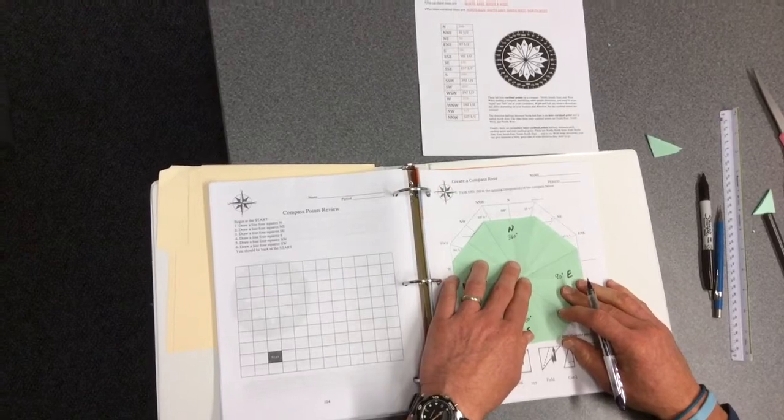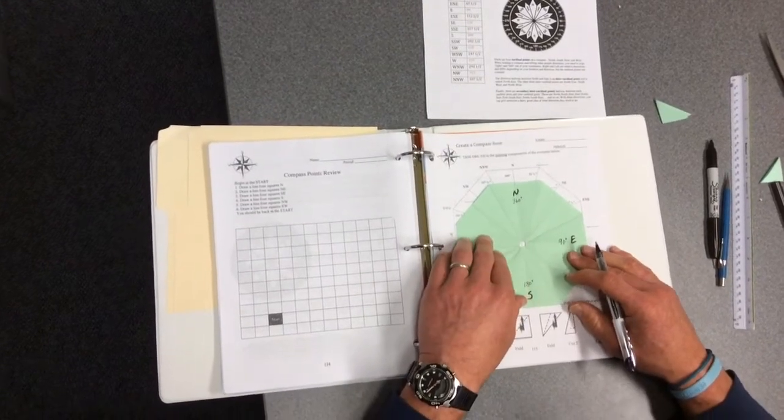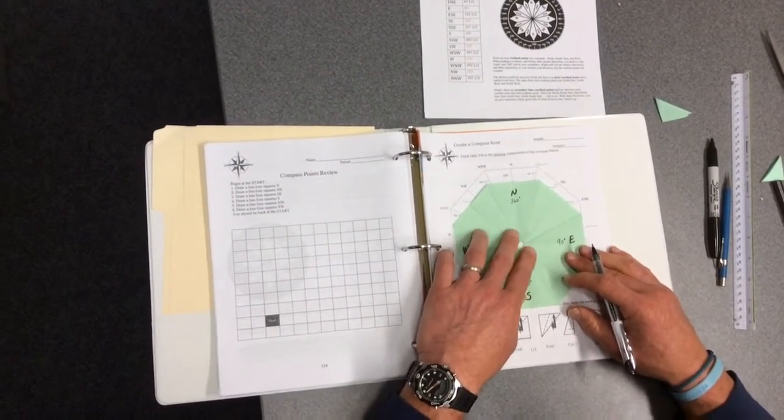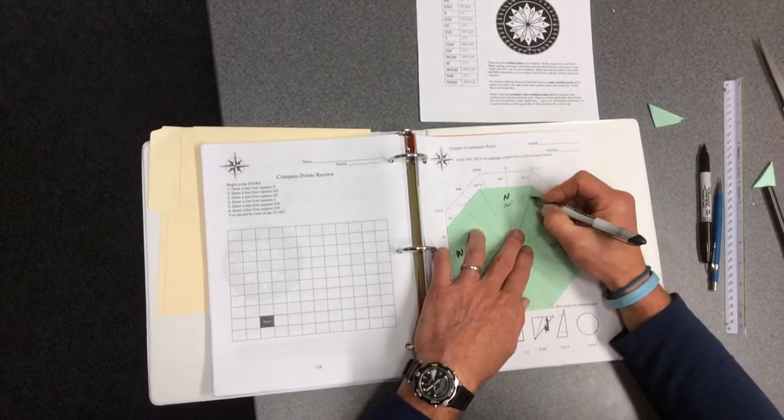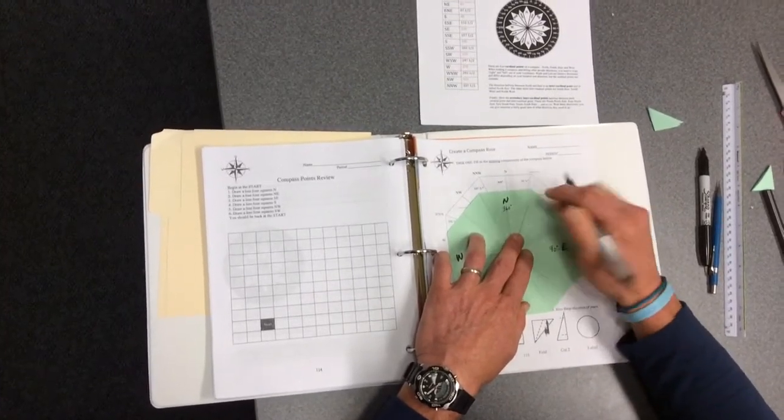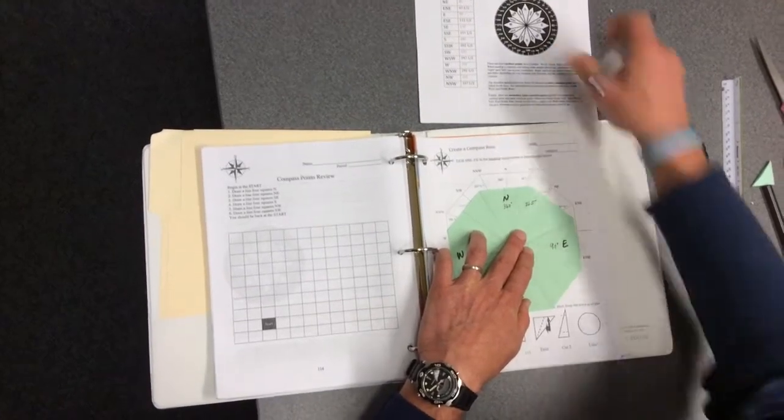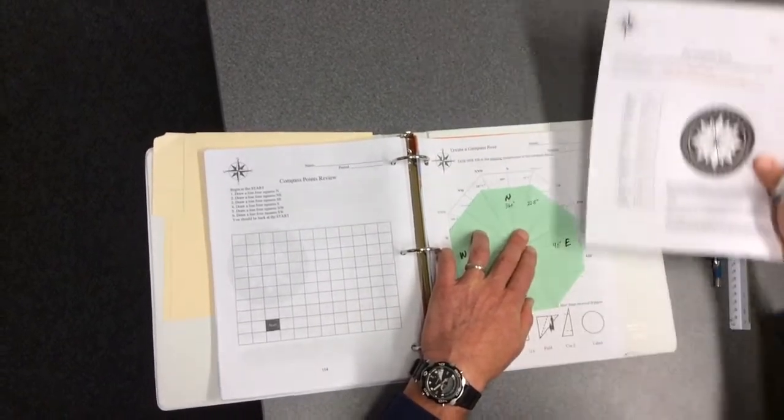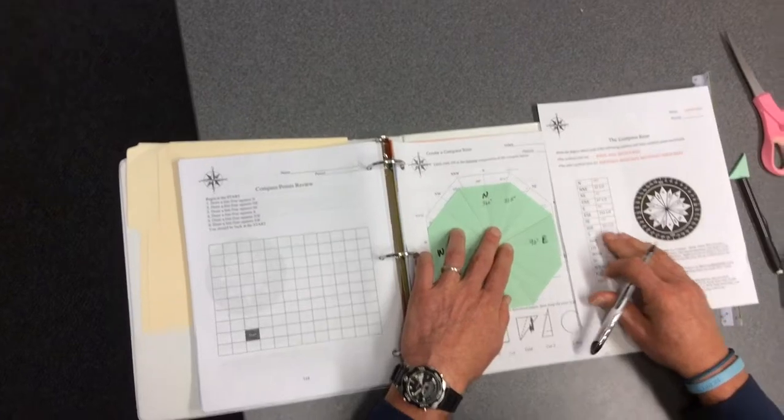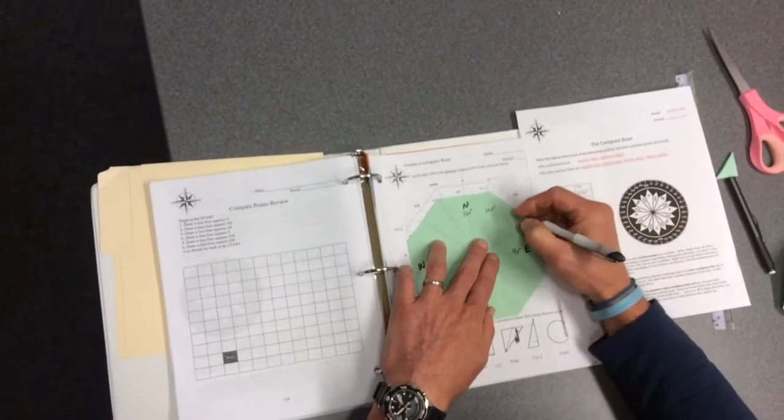Now that we have the four basic cardinal lines, we're going to be adding in the additional directions and degrees. You can use your worksheet from the compass rose to help you fill in for accuracy.